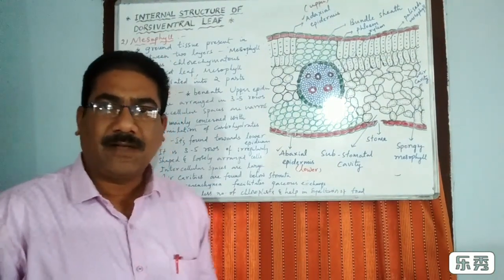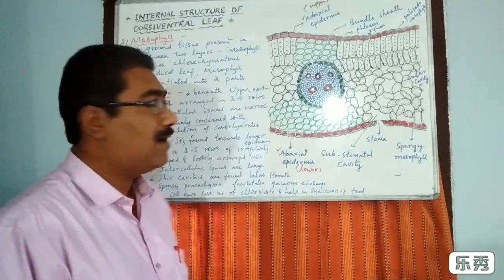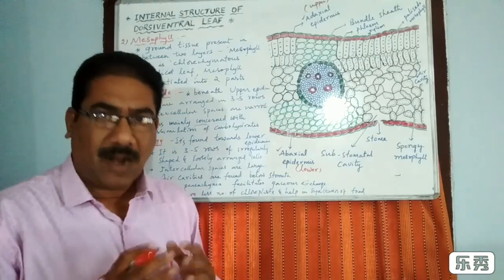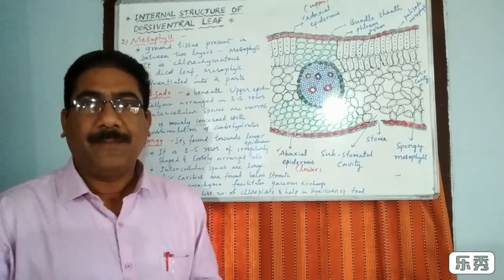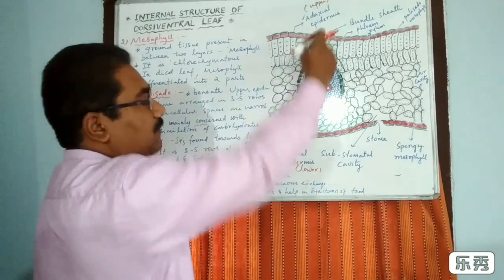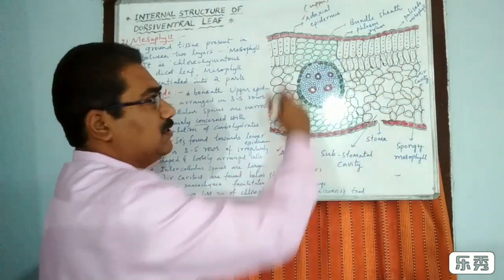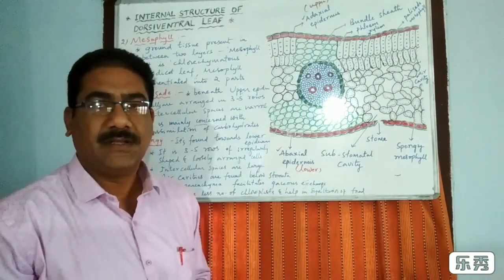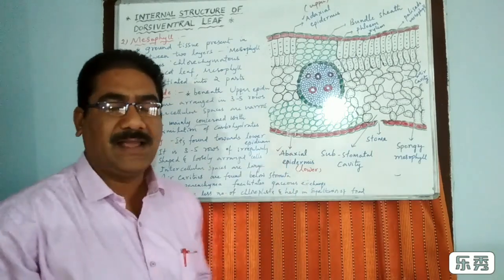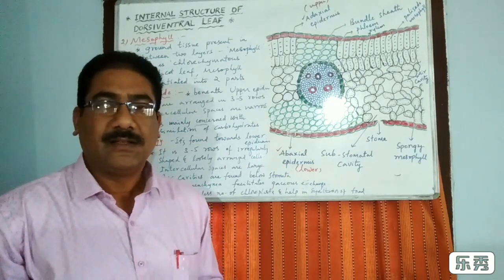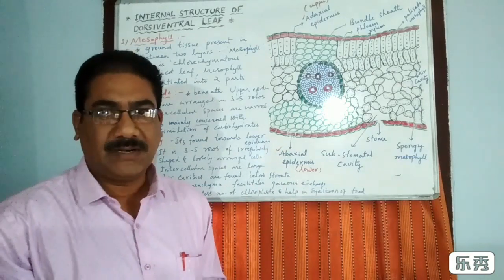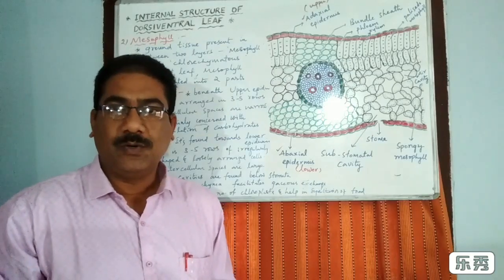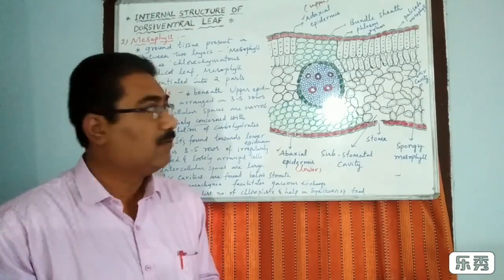The second important part of the dicot leaf is mesophyll. Mesophyll is the ground tissue present between the two epidermal layers. It is a chlorenchymatous tissue and is differentiated into two important parts in the dorsiventral leaf.